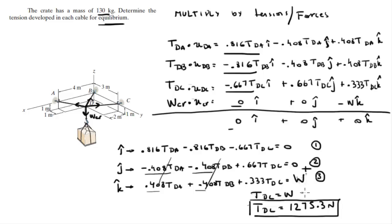And I got this by multiplying the mass, which is 130 times 9.81 meters per second squared. So cool, we got TDC. Now we need to find the other two.